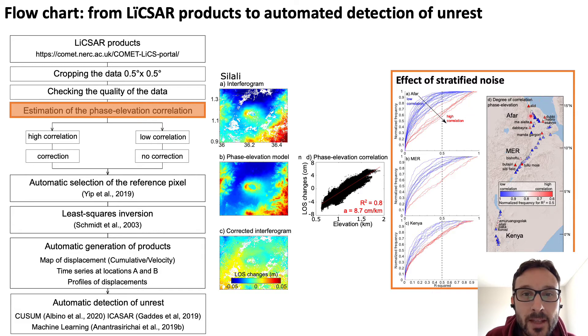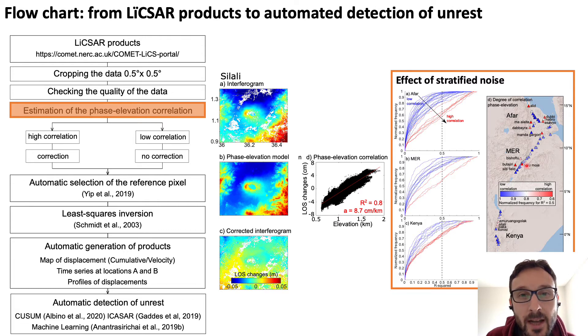These high-correlation volcanoes are located on the map along the margin of the rift system, because the phase-elevation correlation is higher there due to border faults and the plateau relief.